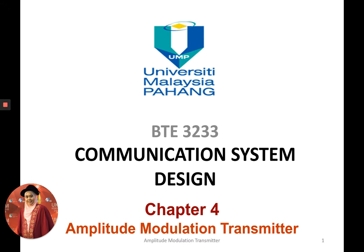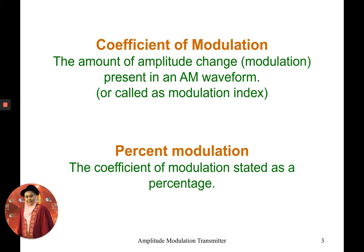In this video, I will continue about chapter 4 and explain more on modulation index. In the previous video, I already explained how we can calculate the modulation index from the equation derivation. So what is modulation? Some books write it as coefficient of modulation. Both are the same term. It's actually the amount of amplitude change present in an AM waveform — how much modulation has been done when we want to produce the AM signal.